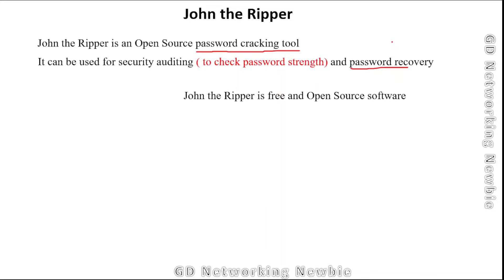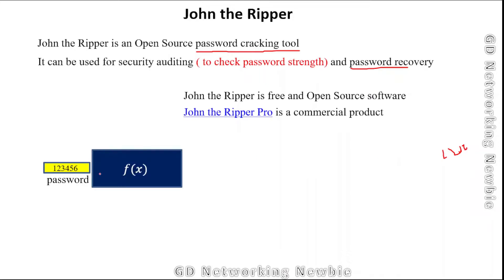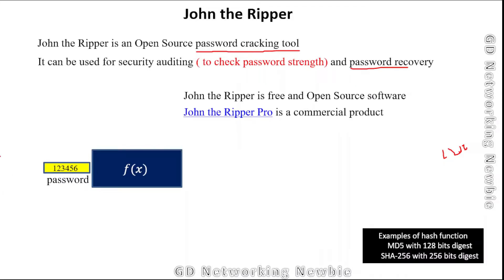John the Ripper is free and open source software, but they also have a commercial product called John the Ripper Pro. Before demonstrating the tool in Kali Linux, I want to go through a brief idea about how passwords are saved. When we enter a password in an operating system or a web application, that password is not saved as-is. A hash function will transform the password into a fixed-length hash value.